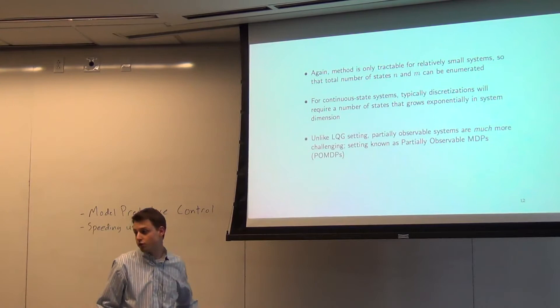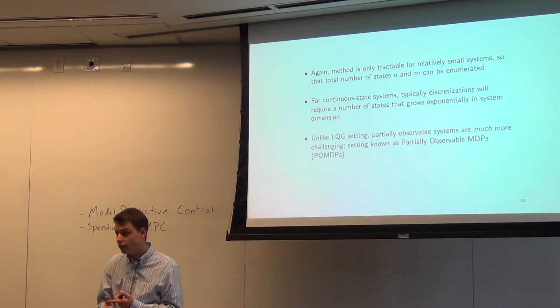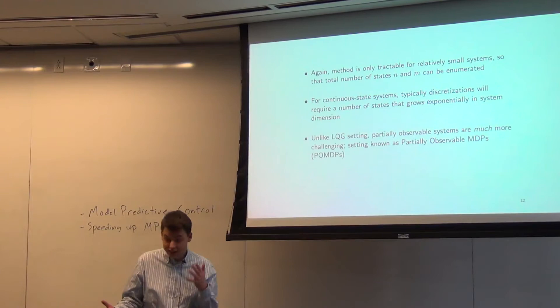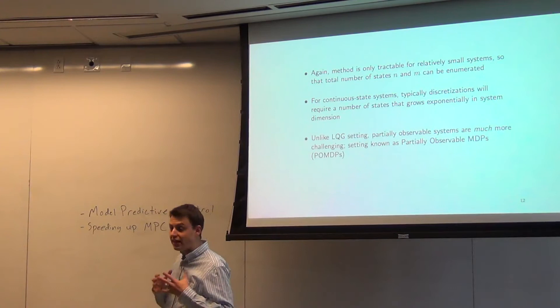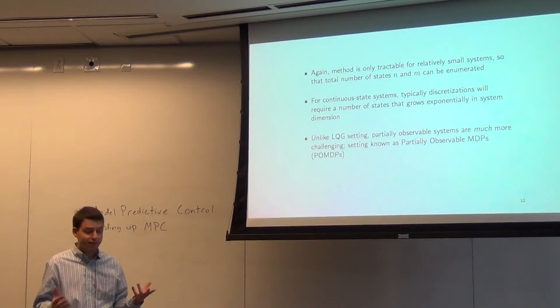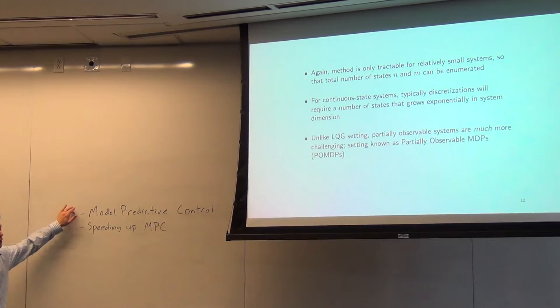We've covered two stochastic settings so far where optimal control is still possible. We talked about the linear quadratic Gaussian case where we can solve the situation exactly using LQR. The second case is the MDP, which covers arbitrary stochasticity in the dynamics, but is limited in that it can only naturally handle domains with finite numbers of states and actions. Both of those are very nice cases that we can handle exactly.